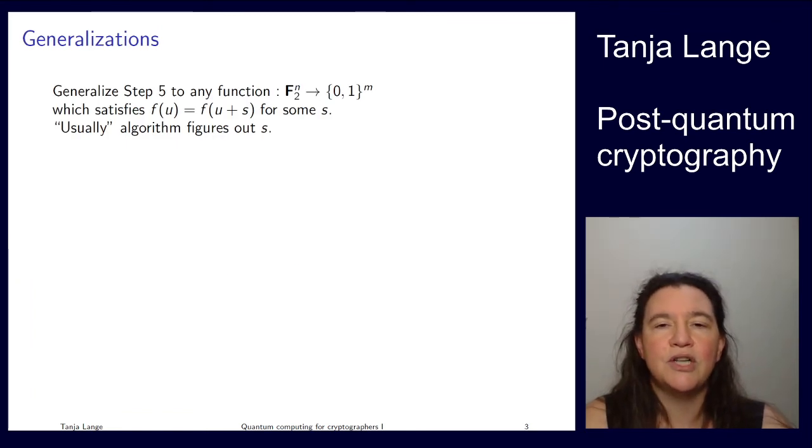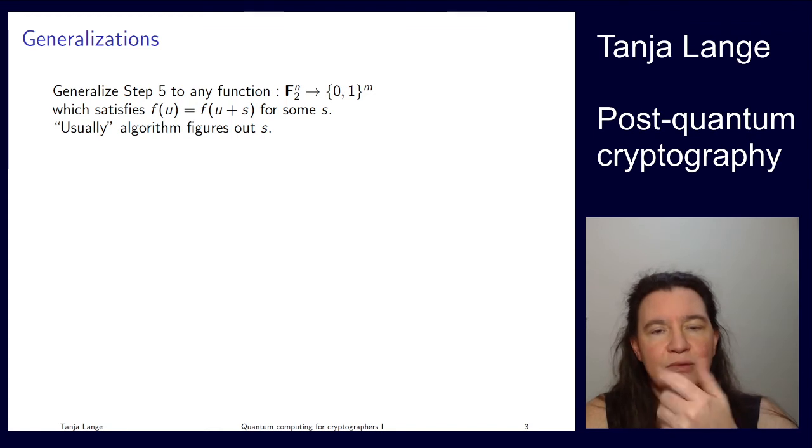But you can generalize it, so you can generalize it to having a different number of output bits from input bits, as long as there's some S which binary addition gives some curiosity. And normally the algorithm figures out S. As I said, you can be unlucky for a sequence, but normally it should be getting it.